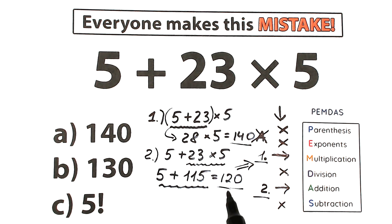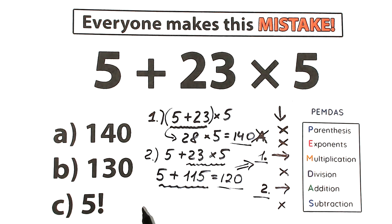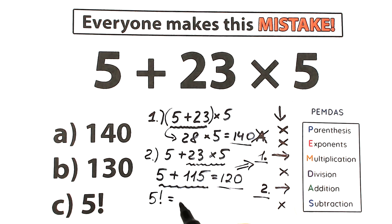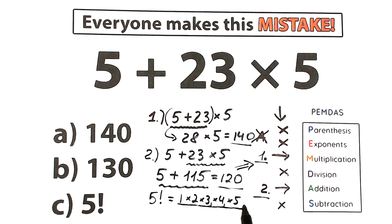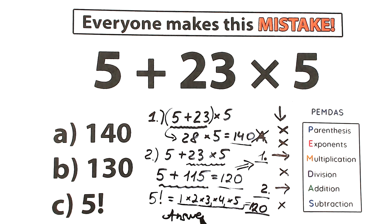Looking at option C, everyone may have forgotten about 5 factorial. Five factorial is the product from 1 to 5: 1 times 2 times 3 times 4 times 5. That gives us 2 times 3 equals 6, times 4 equals 24, times 5 equals 120. So 5 factorial equals 120, which is the same as our answer — therefore option C is the correct answer.